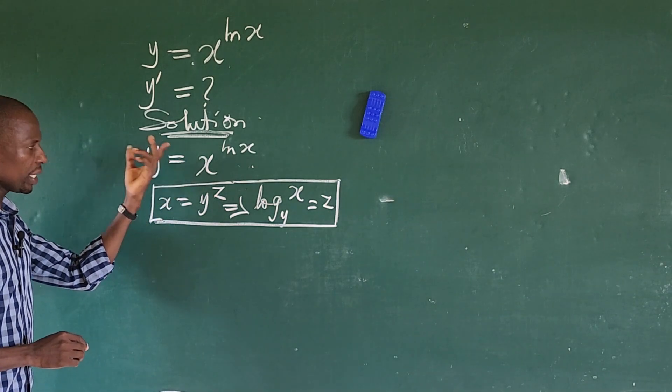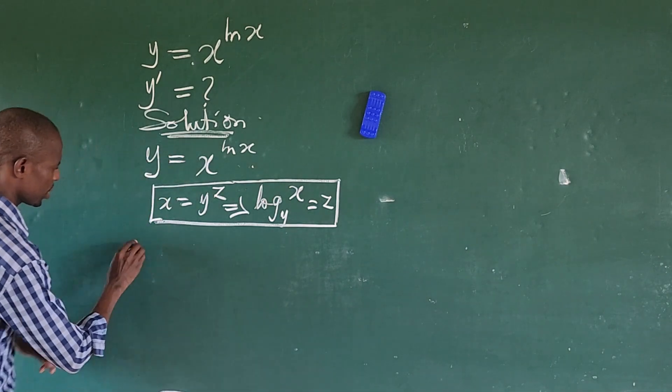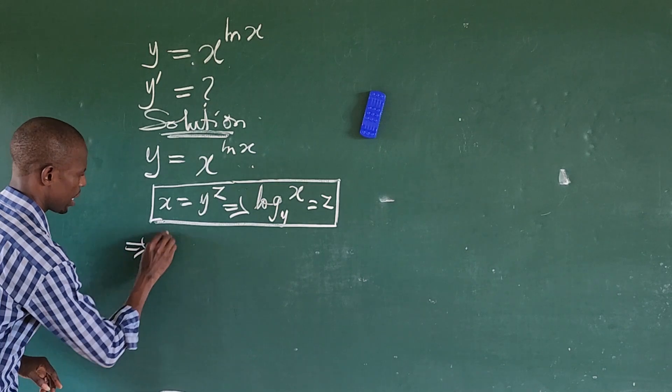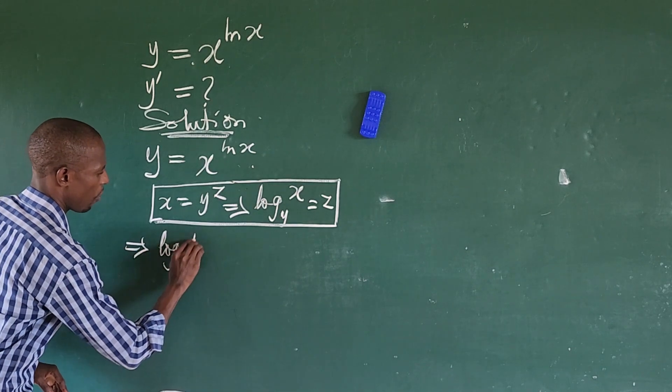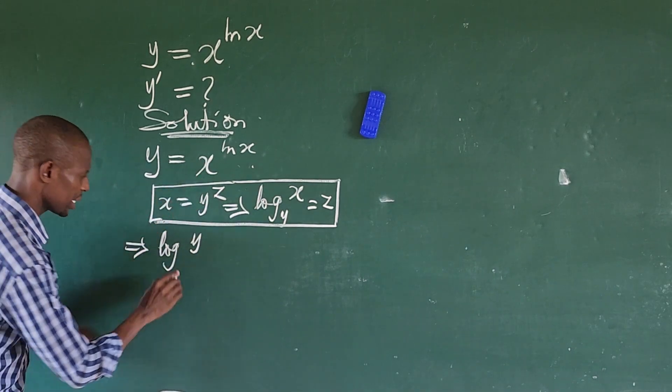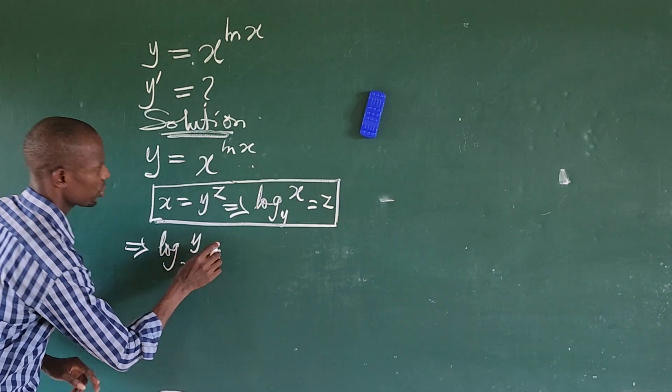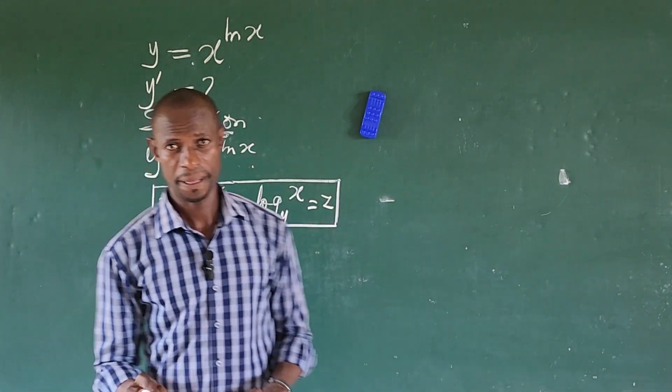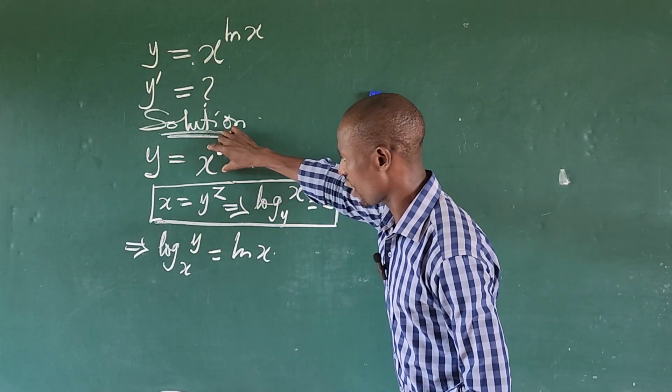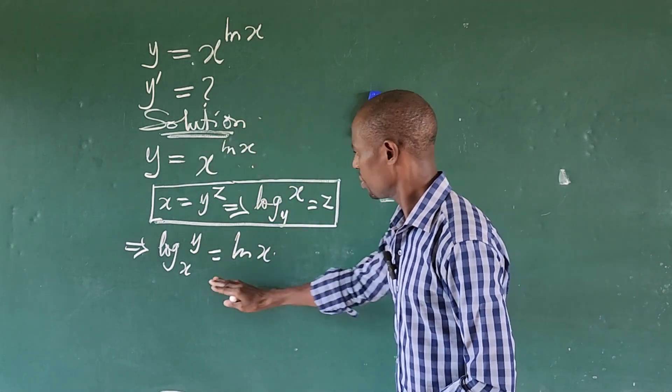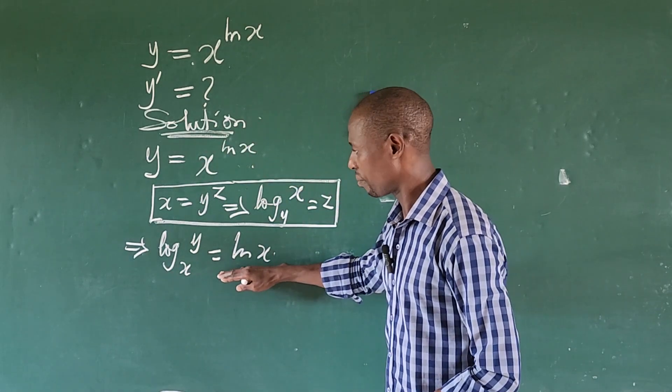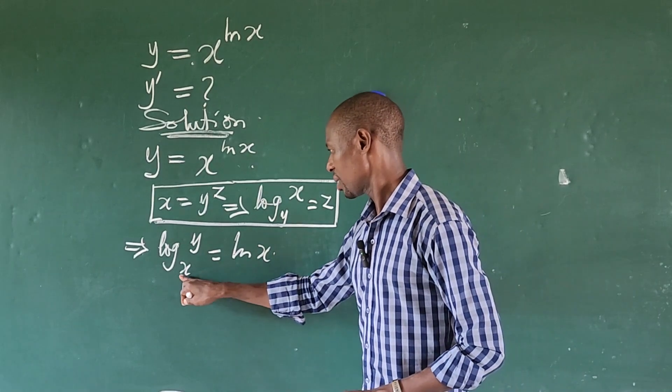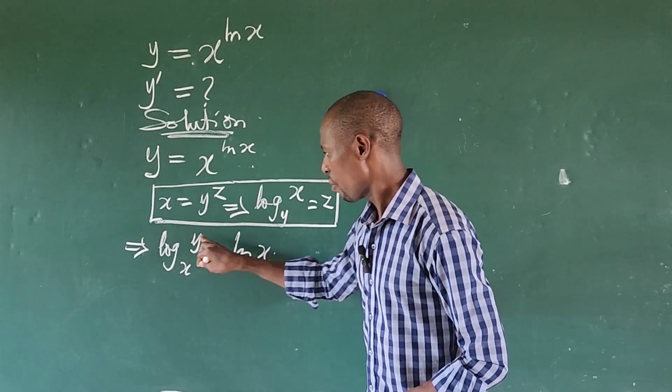So if we put this log into account, then we can rewrite this expression in log form. This will give us log y base x equals ln of x. So we have it in this form as we brought that to log rating form. Now look at the base number here, this is log y base x.